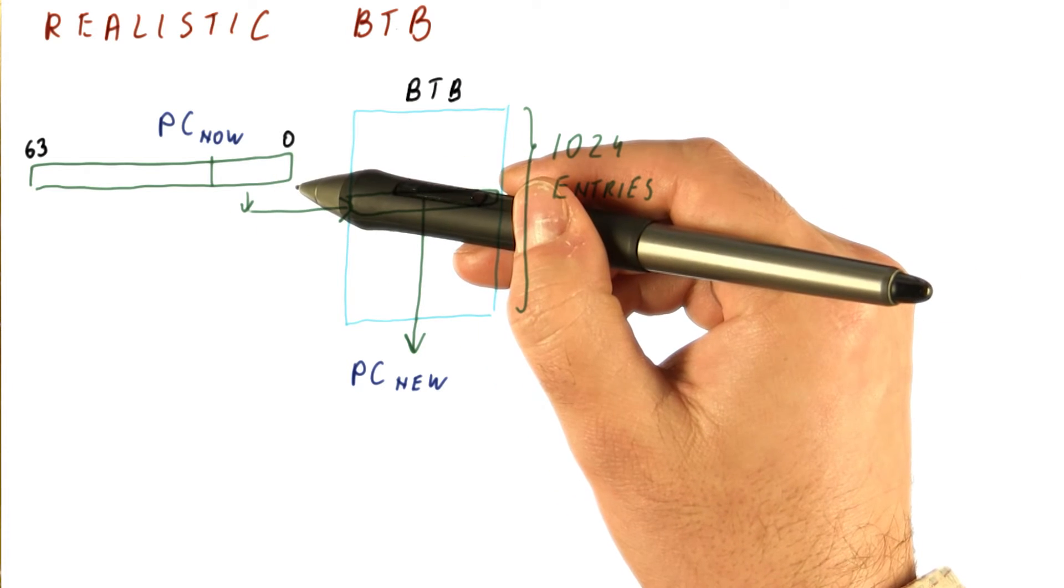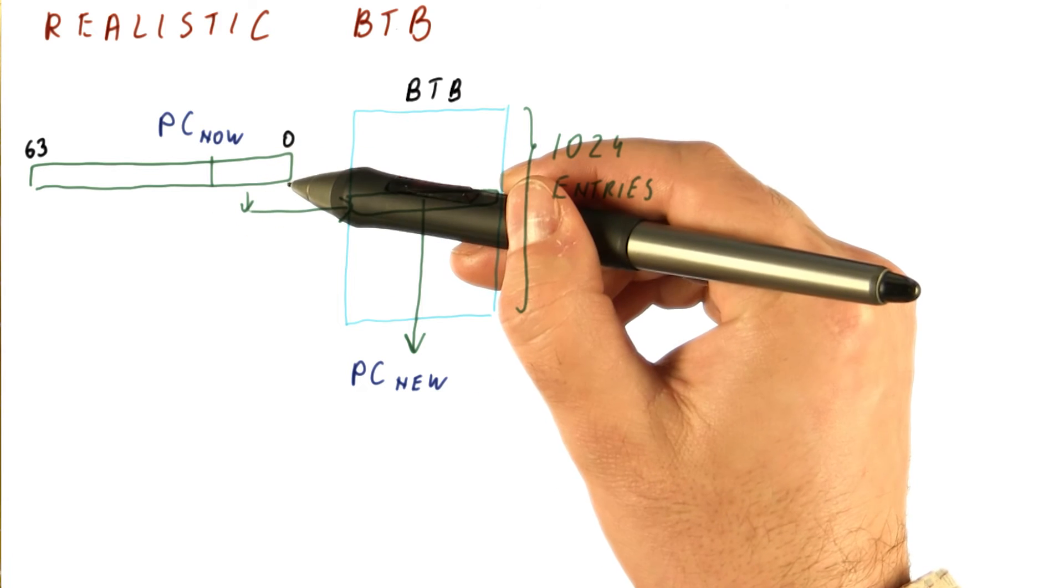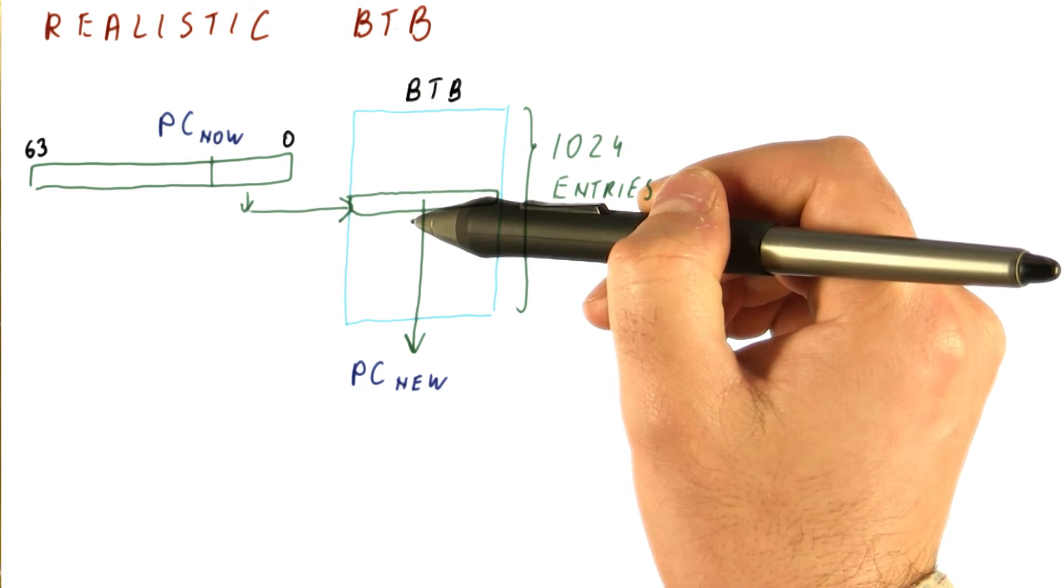This mapping function is really fast because all we do is we just take these 10 bits and feed that to the B2B as an index.